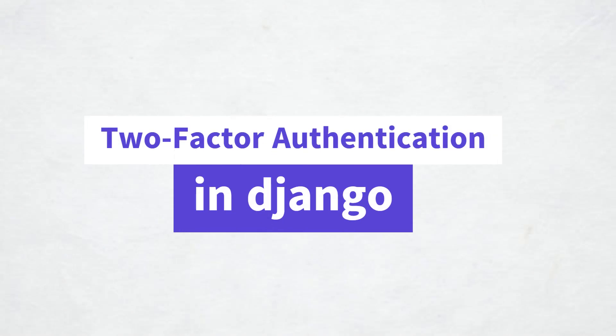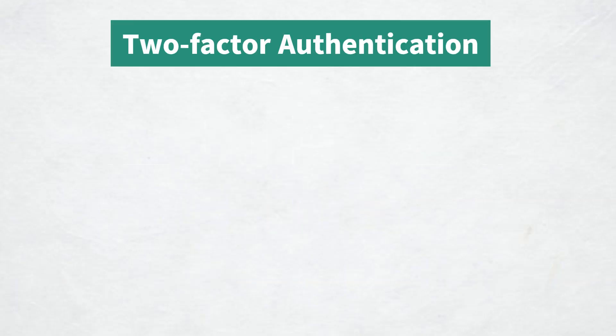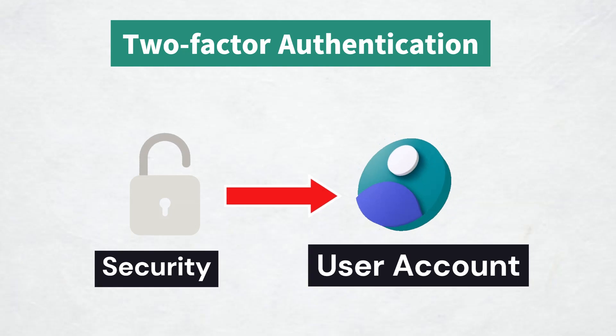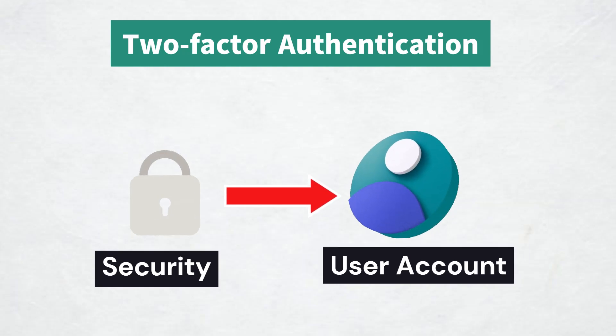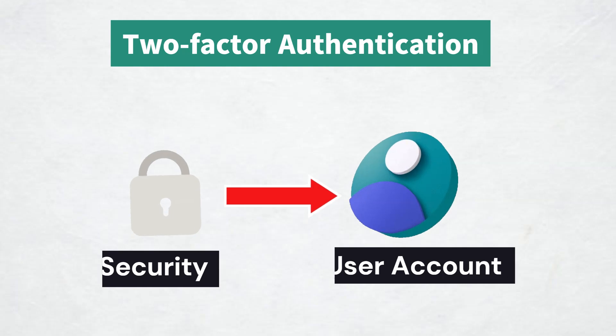In today's video, we are going to implement two-factor authentication in Django. We will be implementing 2FA using an Authenticator app like Google Authenticator which generates time-based OTPs. Two-factor authentication adds an extra layer of security to our user account by requiring not just a password but also a second piece of information that only the user has.